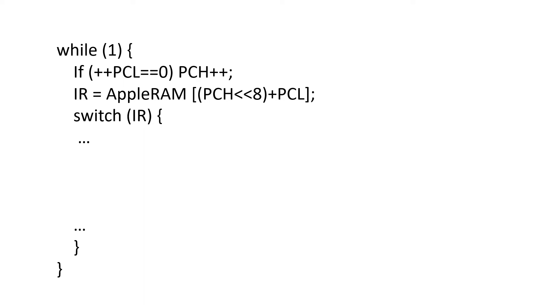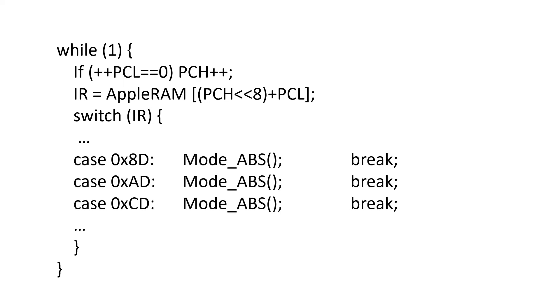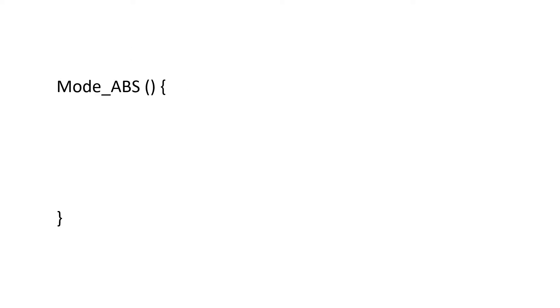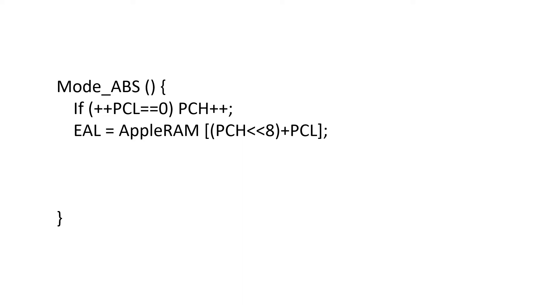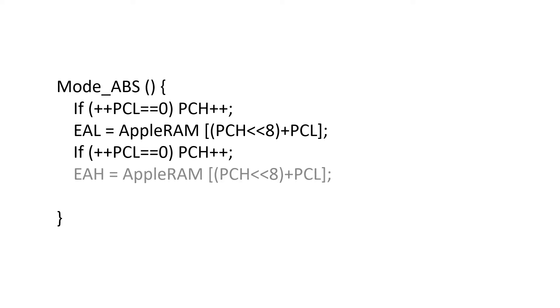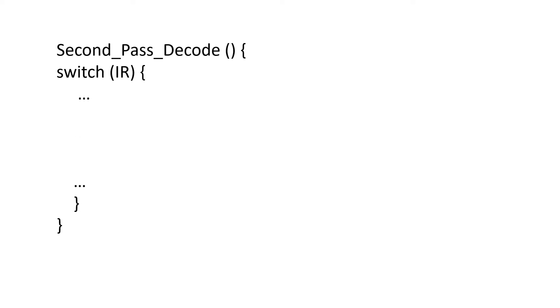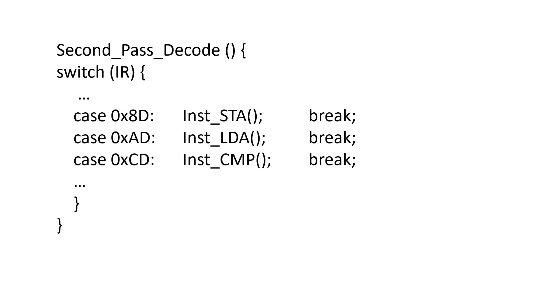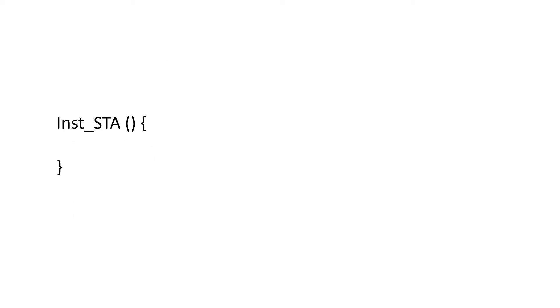Looking at our C code for the instruction cycle: in the first pass, these three instructions jump directly to the absolute addressing mode service routine. There we start by incrementing the program counter, load the next value from main memory into the EAL variable, increment the program counter again, and load the next value into EAH, then jump to second pass decode. There we have a big switch statement on the instruction register variable and jump to the various service routines. At this point the instruction just knows the address of the data is stored in EAL and EAH. The store A instruction simply writes the value in the A register into the memory location pointed to by the effective address.